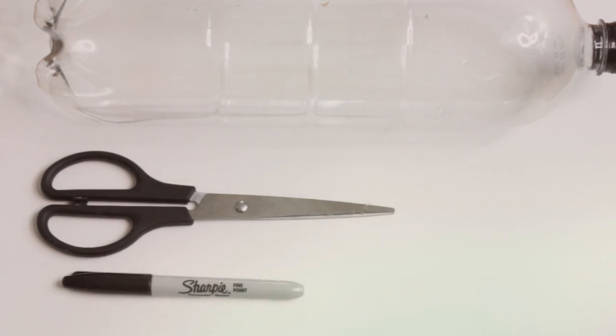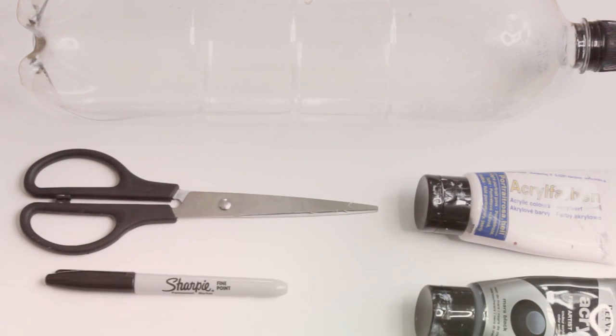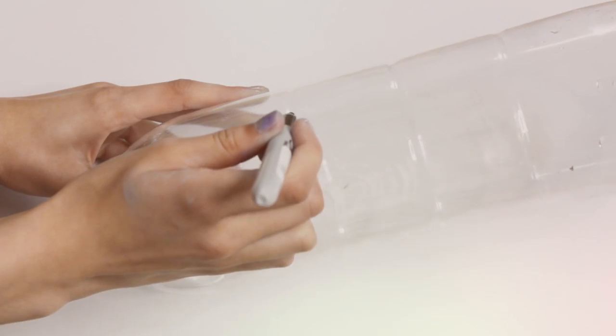all you're going to need is a plastic bottle, some scissors, a sharpie, and some acrylic paint. The first thing you have to do is take your sharpie and draw the outline of